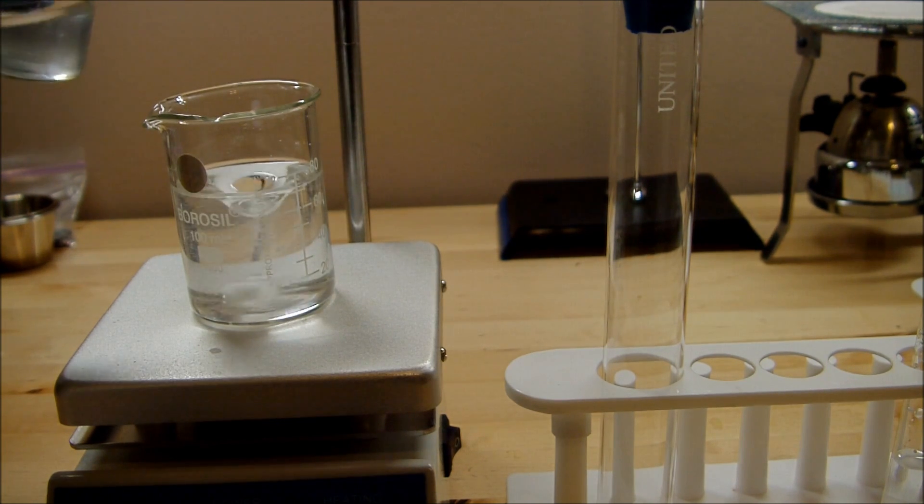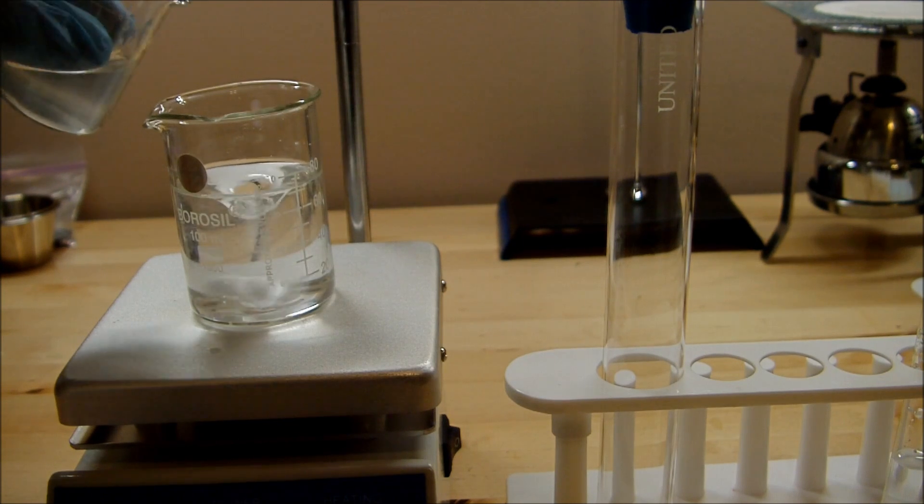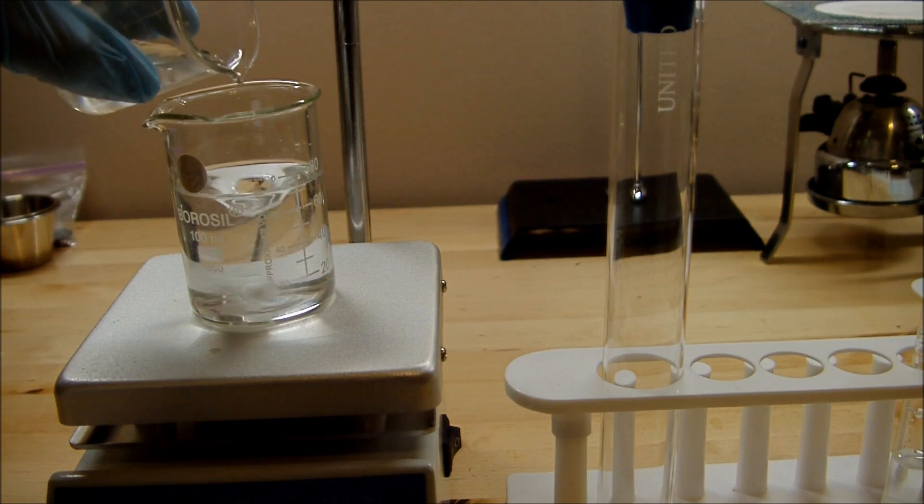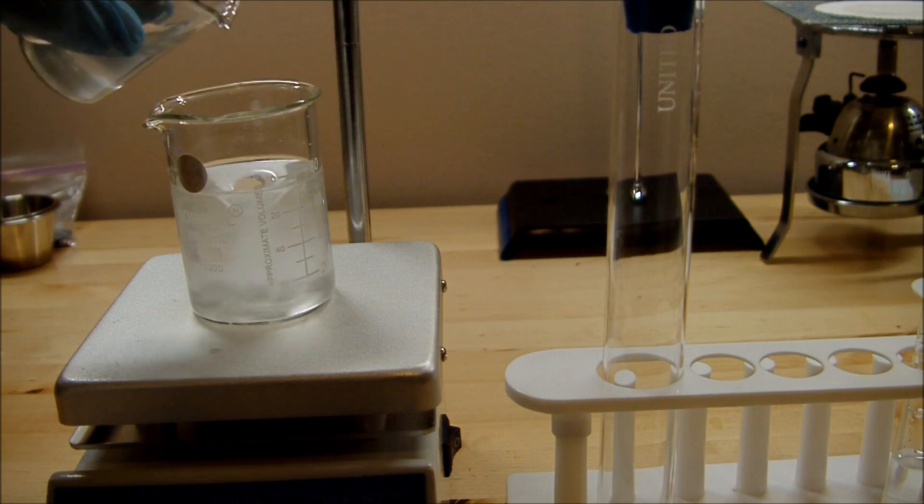And this is actually pretty interesting because you can see once the two are combined, it immediately forms a precipitate, and that's sort of the key to the workings of the storm glass.